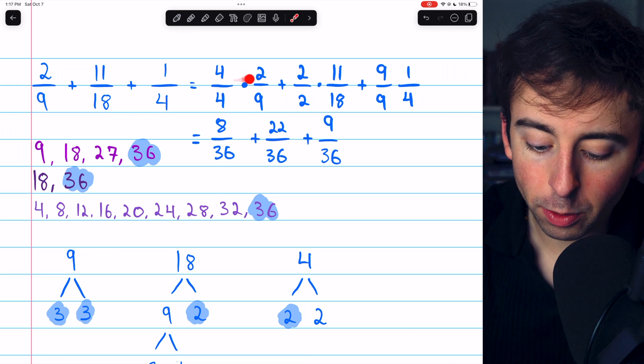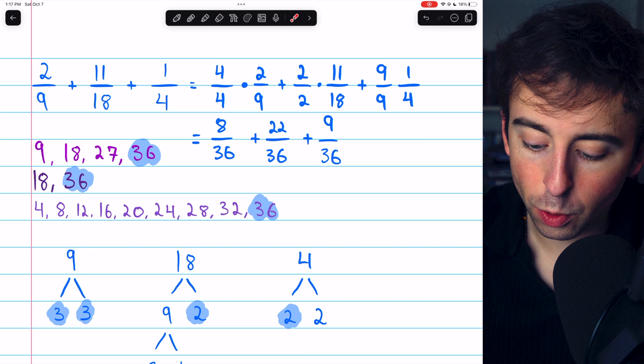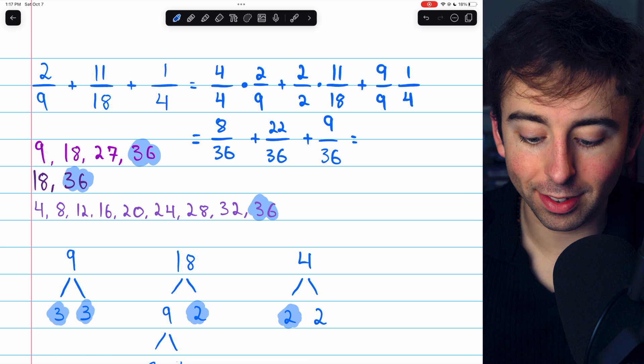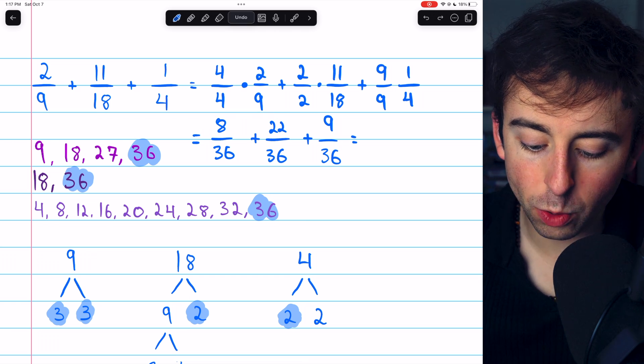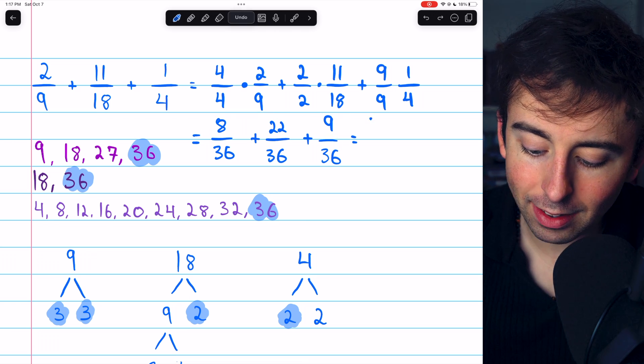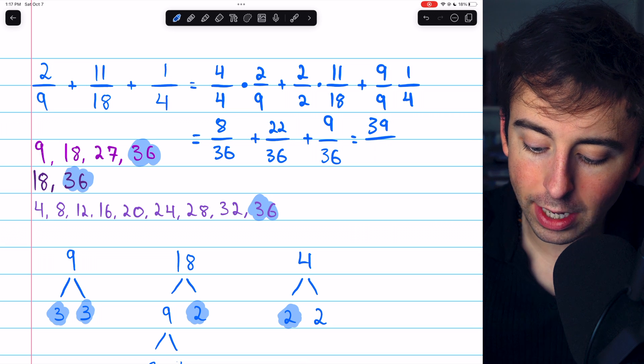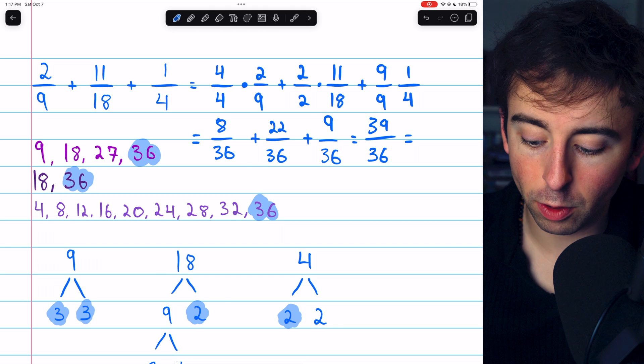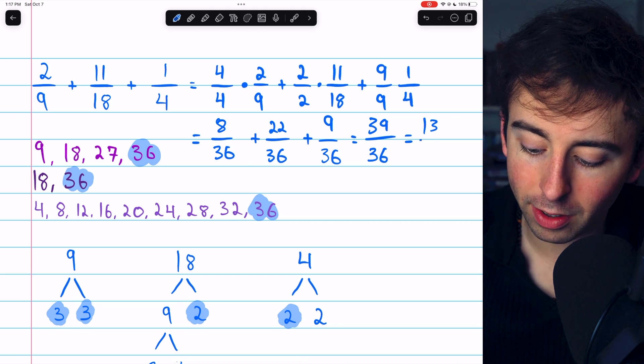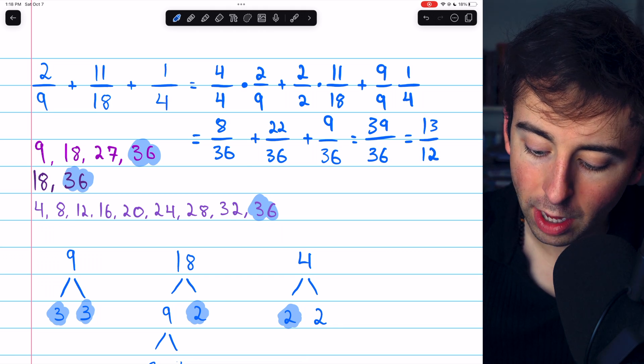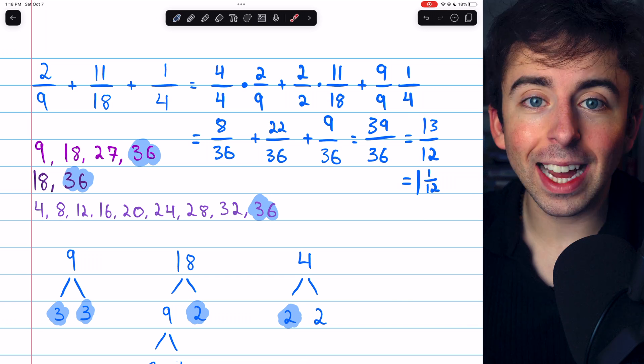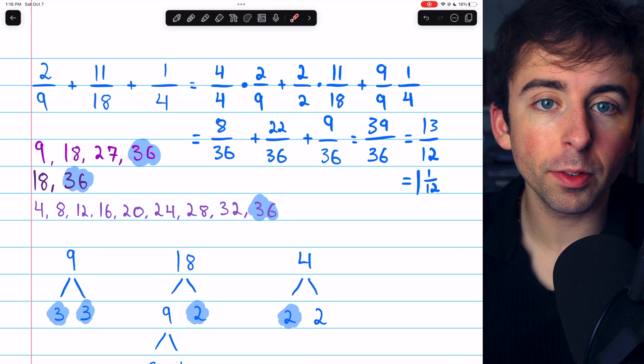Then we get numerators of 8, 22, and 9. And now we can add the fractions because the denominators are the same. 8 plus 22 is 30, plus 9 is 39. So we get 39 over 36, which can be reduced by a factor of 3. Then we would get 13 over 12, which as a mixed number is 1 and 1/12. And that's how to add three fractions with unlike denominators.